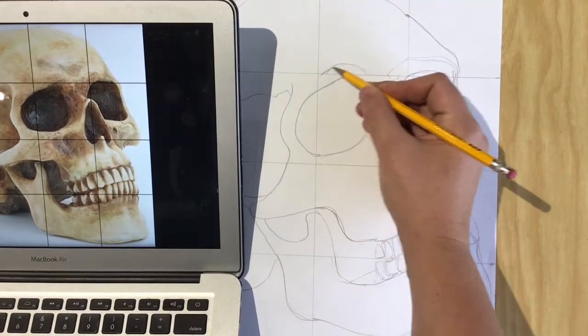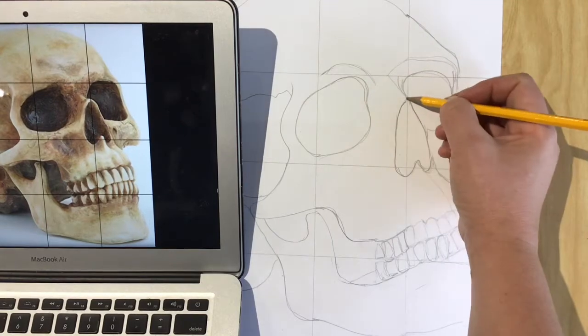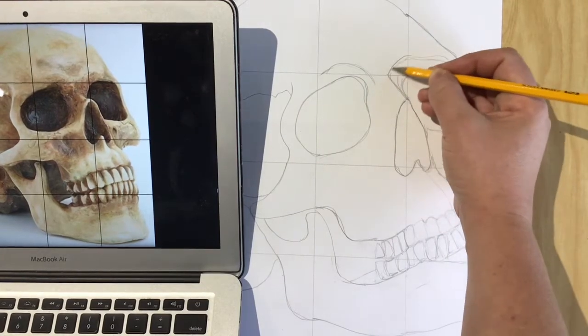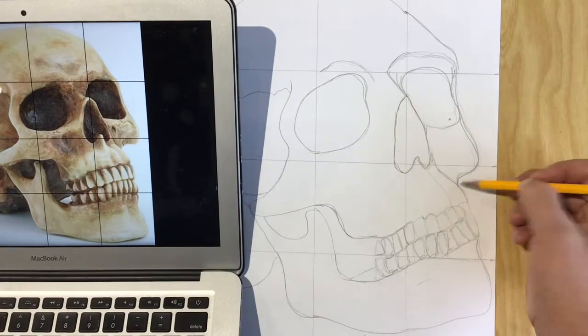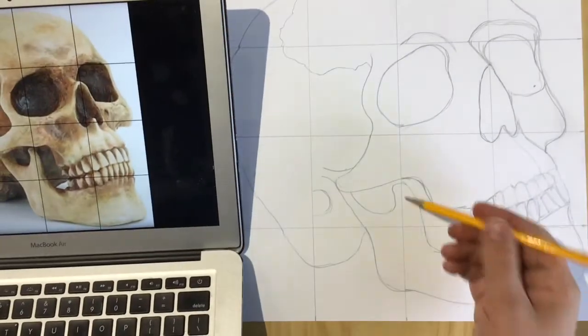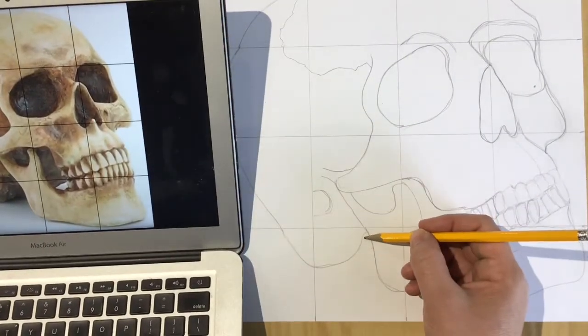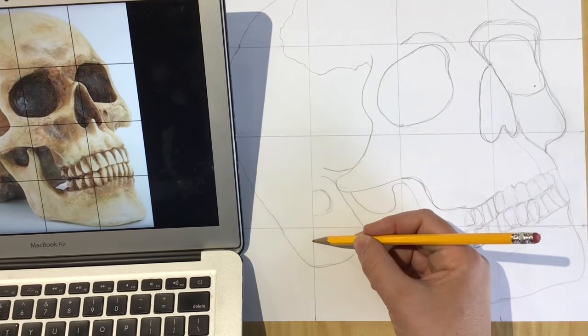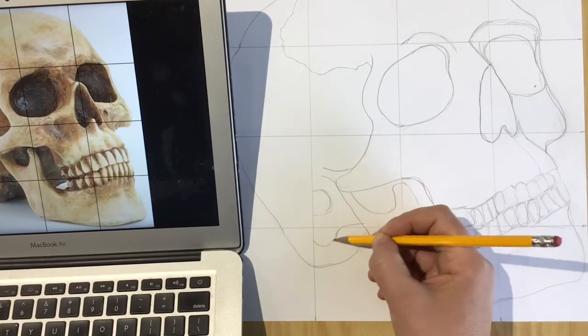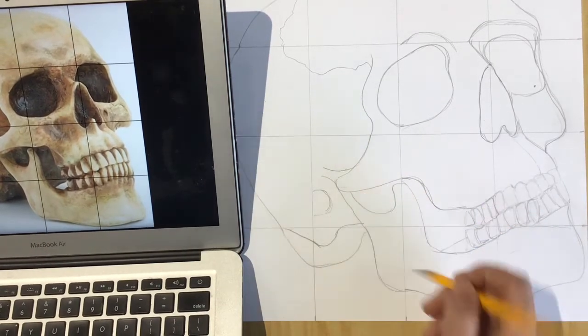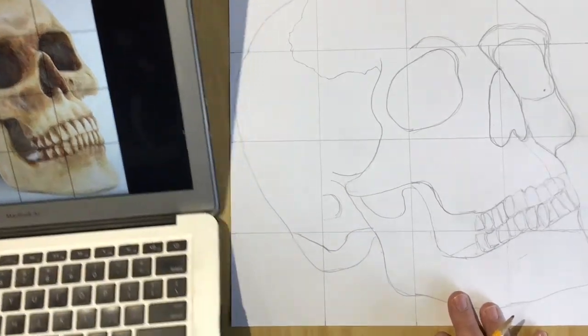Because the grid method is really good to start a drawing, but it's not going to help you finish a drawing. So after you're done working with the grid, then you want to go back and try to find any detail that you might not have quite gotten right as you look at the image as a whole. And then you can erase your grid.